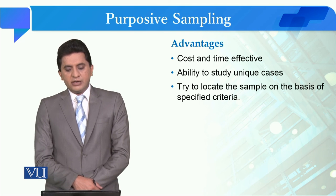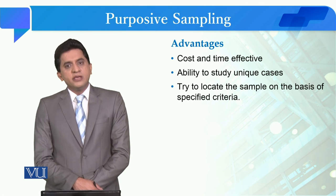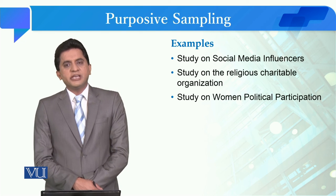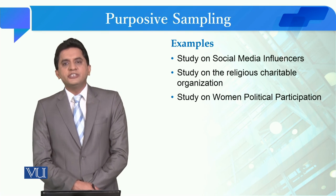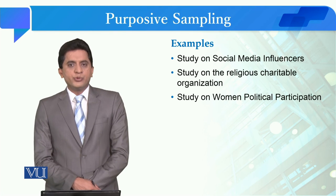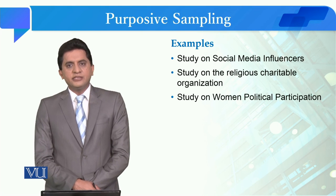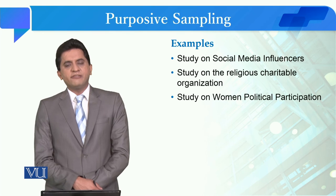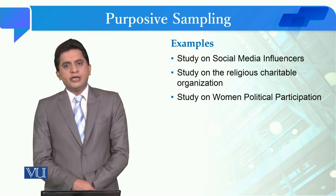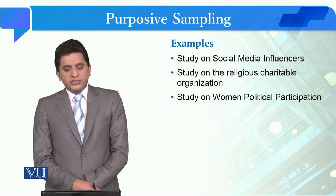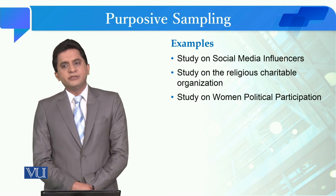In purposive sampling, it is mandatory that you develop a specified criteria and locate the sample based on it. For example, if you are doing a study on social media influencers, you have to define who qualifies as a social media influencer — what their reach is, their following, their impact on business — and then collect data only from those who meet that definition.